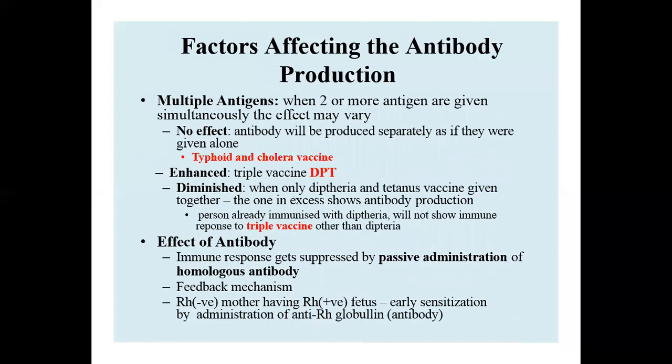Multiple antigens also affect antibody production. When two or more antigens are given simultaneously, the effect may vary: sometimes there is no effect, sometimes the effect is enhanced, or it can be diminished. The presence of another antibody can also suppress the immune response through the passive administration of homologous antibodies, known as the feedback mechanism.